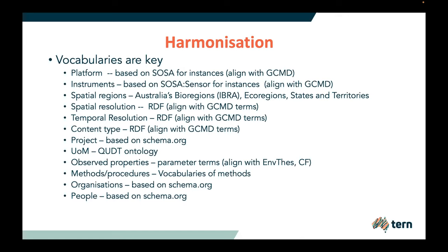If there is a certain instance of a platform, we describe that. For example, in our case, even the ecological site is a platform, and the flux tower you saw in the picture is also a platform, with instruments attached to it, which we describe using a SOSA sensor. If we are describing an instance of an instrument, we use SOSA; otherwise we use SKOS vocabulary to describe the type of sensor. For units of measurement, we use the QUDT ontology, and we work closely with them - if a unit of measurement is missing, we send a pull request and they add it to the ontology. For spatial and temporal resolution, we use what is in GCMD because it fits well and doesn't require much extension.